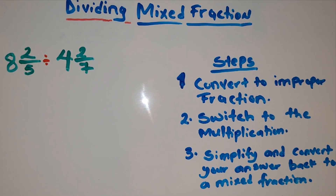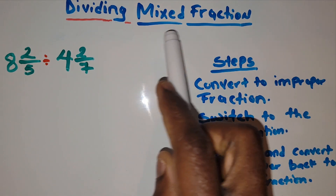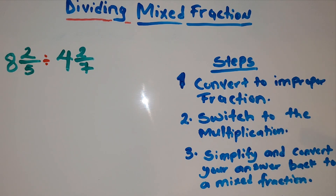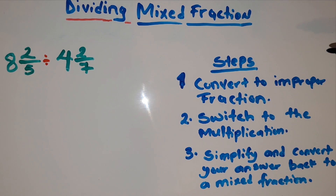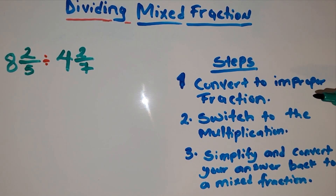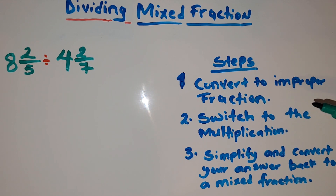Welcome to the Shooting Star Learning Center. For today's video I'm going to be talking about dividing mixed fractions. The first step in dividing a mixed fraction is to convert to an improper fraction. The second step is to switch to multiplication, and the third step is to simplify and convert the answer back to a mixed fraction.